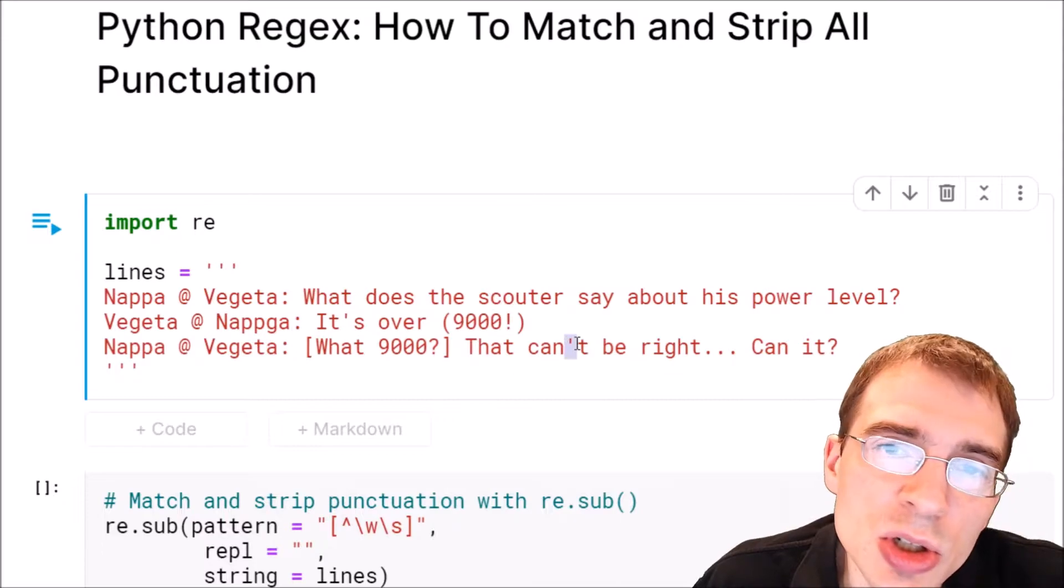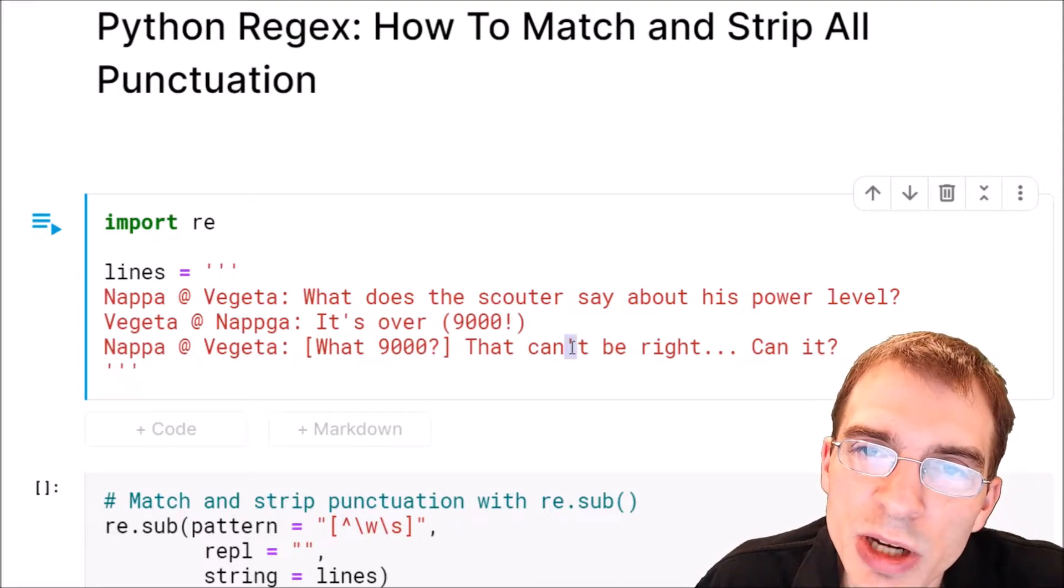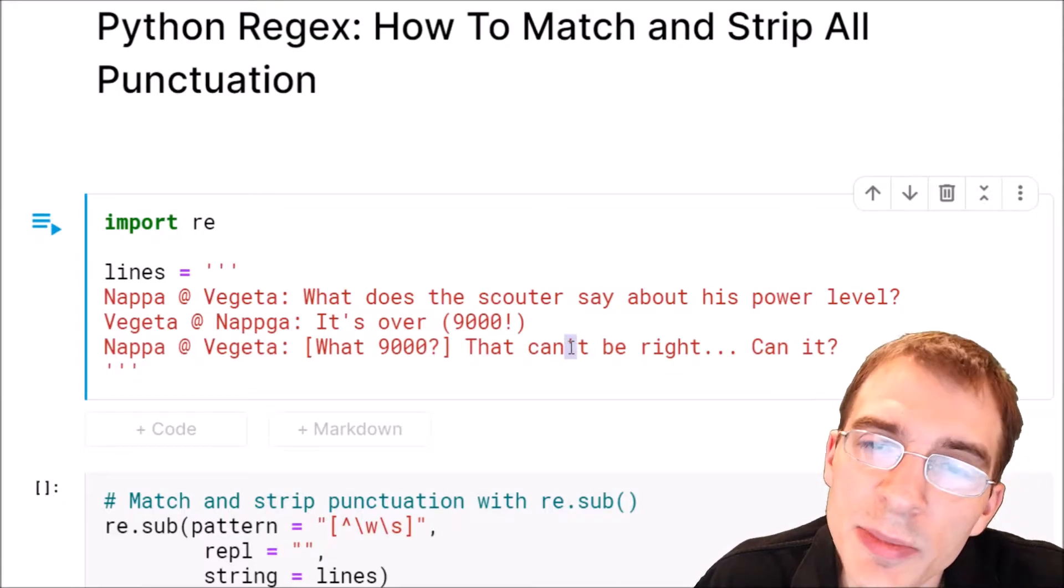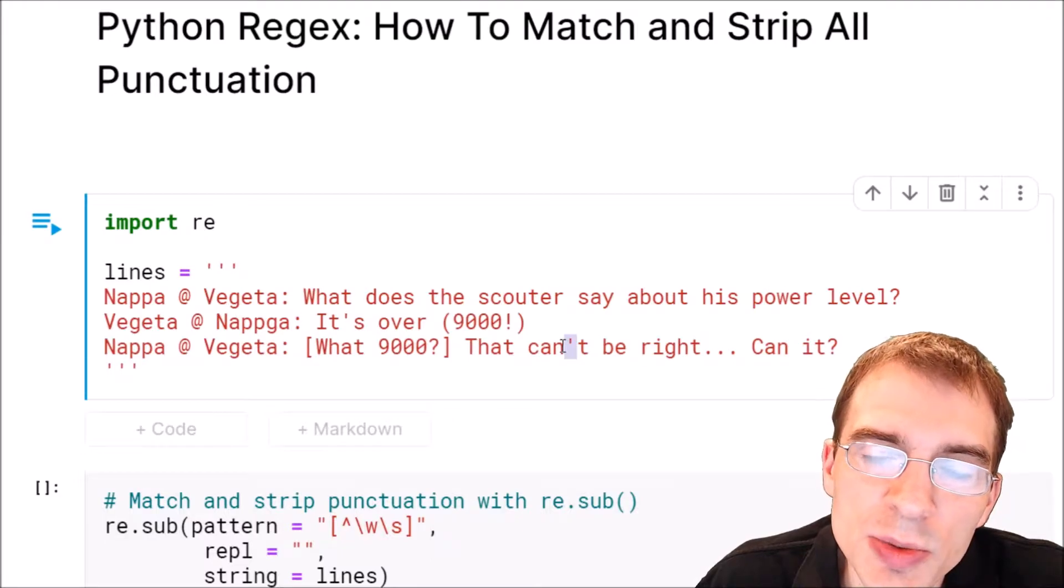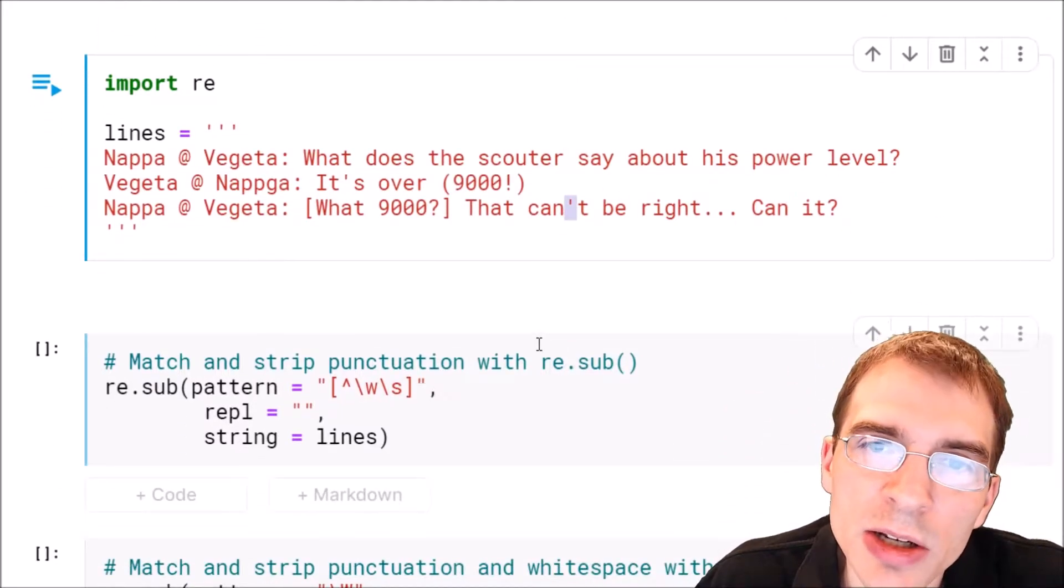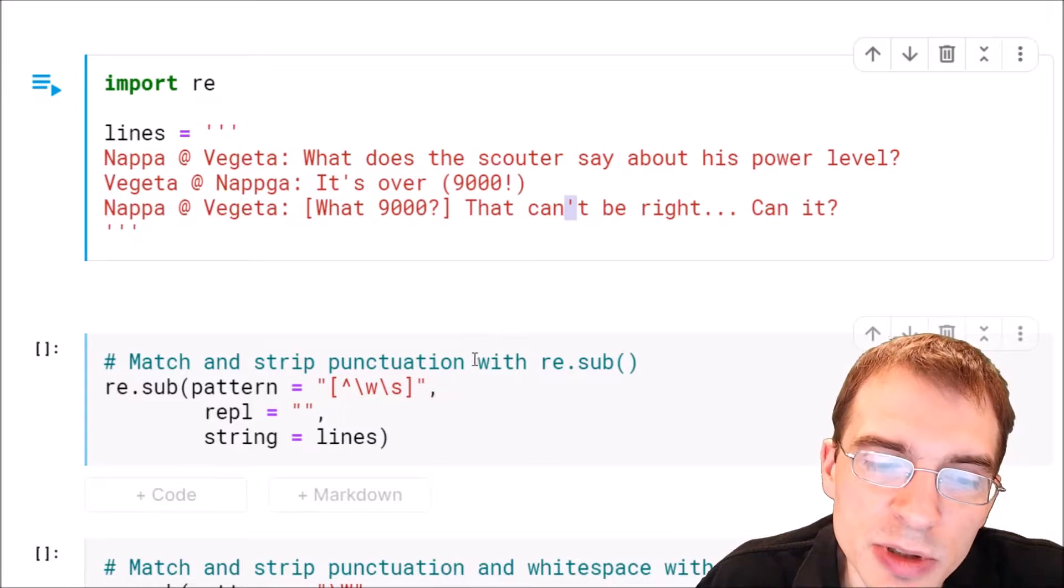So what we essentially want to do is substitute any punctuation with nothing or the empty string. And to do substitutions, we can use the re.sub function within the regular expression package.